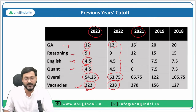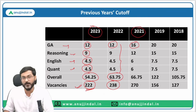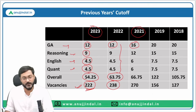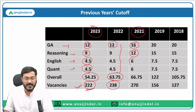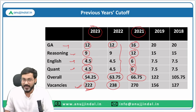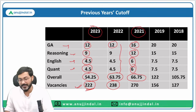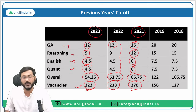In 2021, the GA sectional cutoff was 16 because the paper was comparatively easier than 2023 and 2022. The sectional cutoff for Reasoning was 12 and for Quantitative Reasoning was 6. The overall cutoff was also a bit higher than 2022 and 2023 — it was 66.75 — and the total number of vacancies were 270.